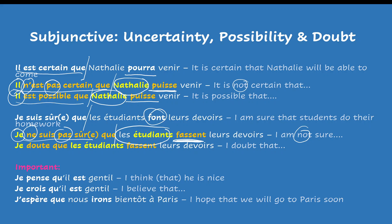Je doute que les étudiants fassent leur devoir — I doubt that students do their homework. Obviously, you're not sure at all because you are doubting. So if you have an expression of doubt, you will use the subjunctive in the second clause. Again, you need to have two different subjects. Otherwise, you'll need to use the infinitive.